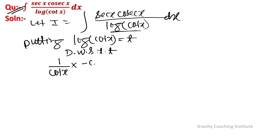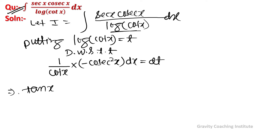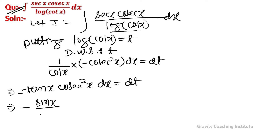So the derivative of cot x gives minus cosec squared x dx equal to dt. Expanding: 1 by cot x, which is tan x over sin x upon cos x, times 1 upon sin squared x dx equals dt.